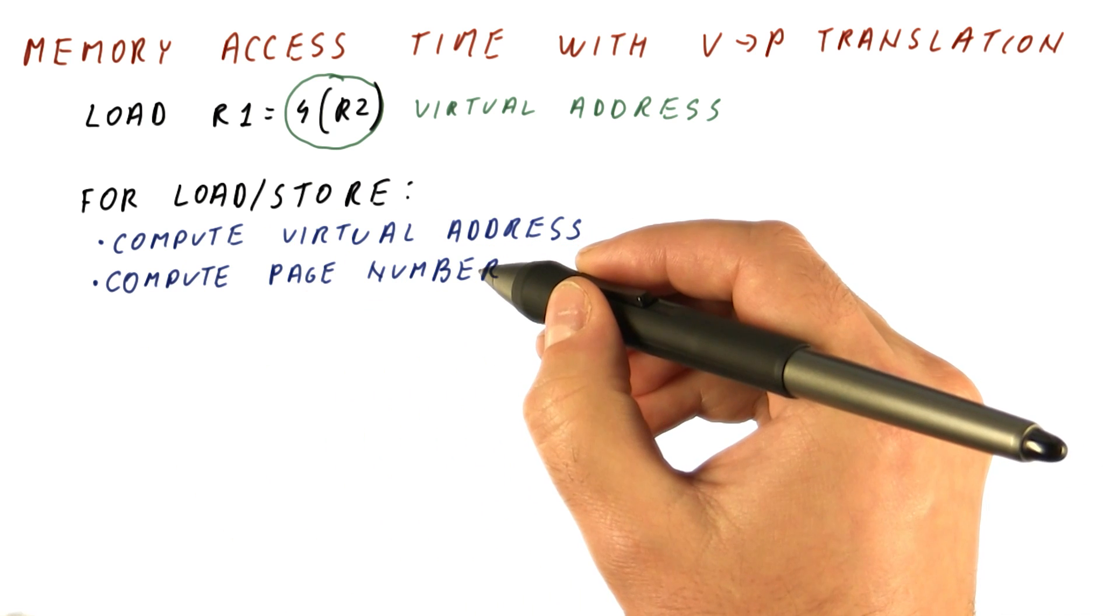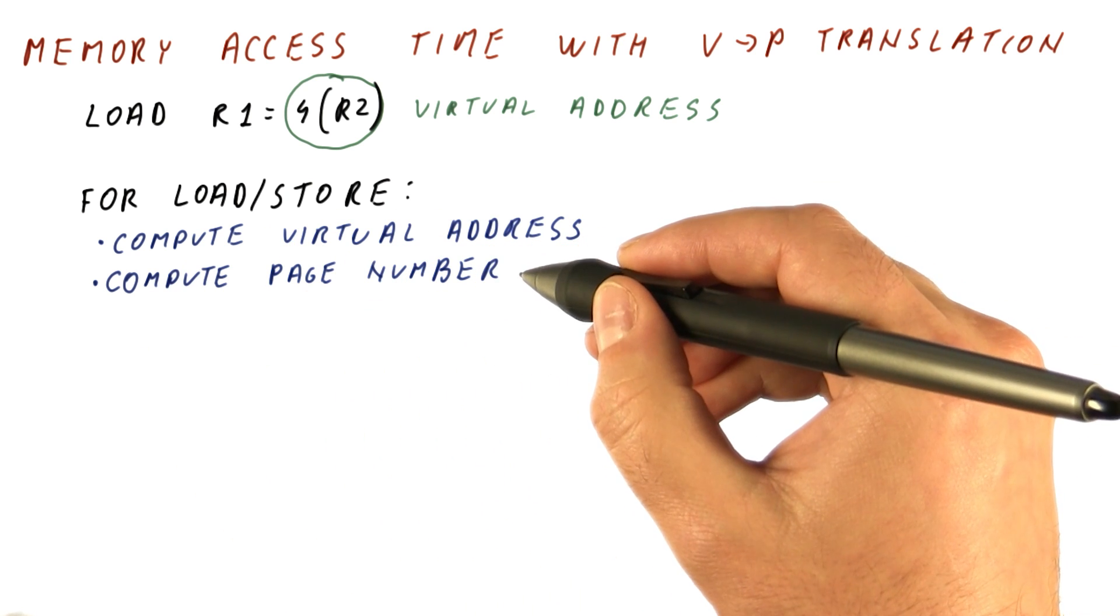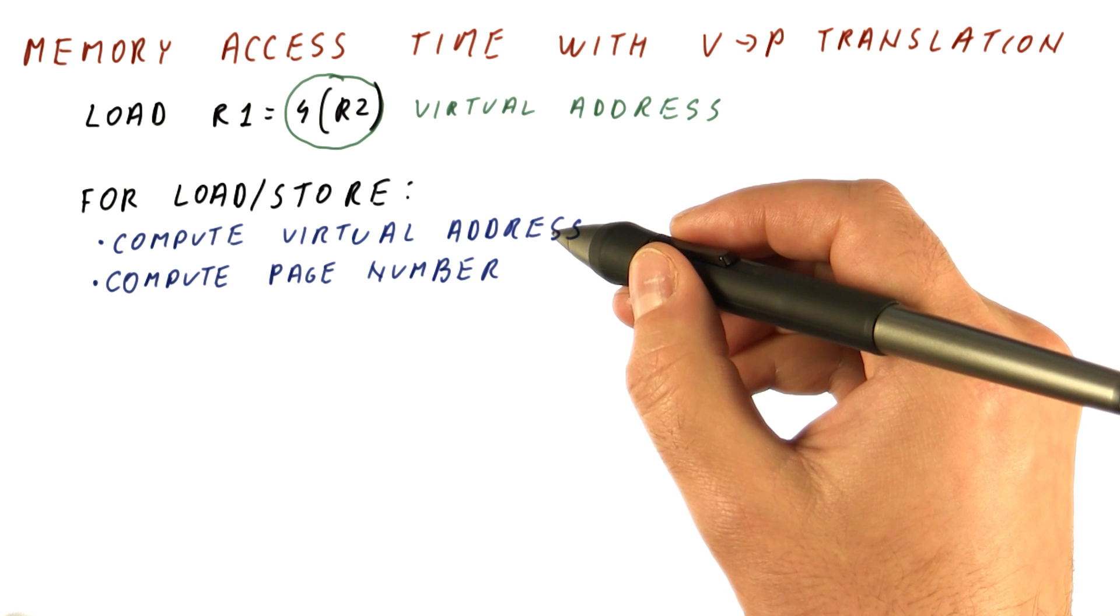Next, the processor has to compute the page number, which is extremely quick, because it just means that we take some bits from the virtual address.